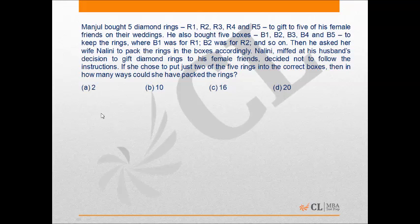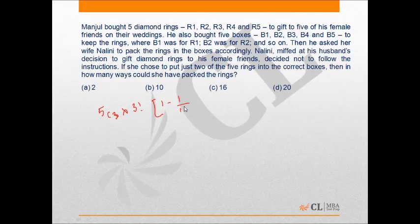We can choose 3 out of 5 rings in 5C3 ways. Now these 3 rings which are packed in incorrect boxes can be distributed in incorrect boxes using derangement of 3 things in 3 boxes. That is nothing but D(3), which equals 3 factorial into (1 minus 1 upon 1 factorial plus 1 upon 2 factorial minus 1 upon 3 factorial).